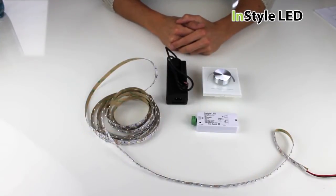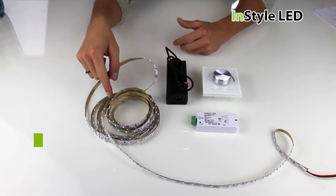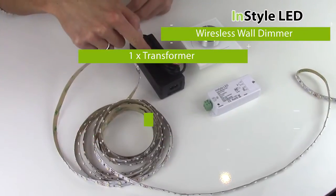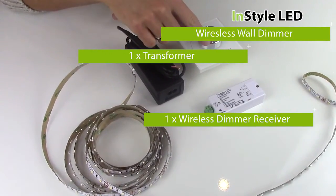For a complete dimming kit you will require the following: single colour or white LED tape, a transformer, the wireless wall dimmer, and the one zone dimming receiver.